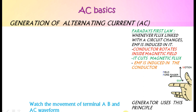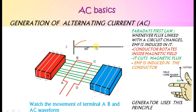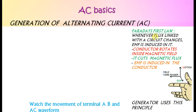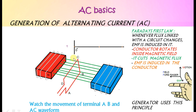Watch the movement of terminal AB and the AC waveform. The working principle is Faraday's first law: whenever flux linked with a circuit changes, EMF is induced in it. A conductor rotates inside a magnetic field and cuts magnetic flux; then according to Faraday, an EMF is induced in the conductor. A generator uses this principle to generate AC voltage.